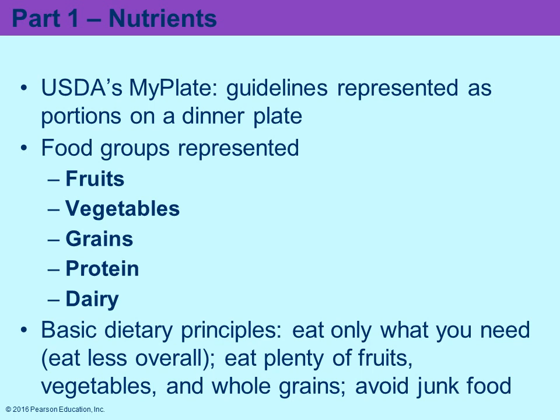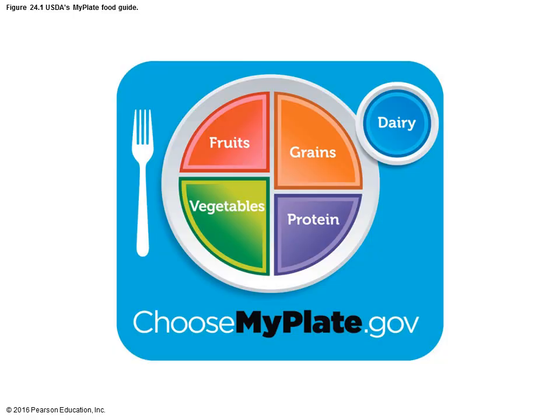Currently they're using what they call the MyPlate. They used to use a food pyramid; now it's the MyPlate. The different foods represented are your fruits, vegetables, grains, protein, and dairy. The general principle is eat only what you need, don't eat in excess, and you should be getting a lot of fruits, vegetables, and whole grains, and try to avoid junk food — which is easier said than done when you're stressed out taking classes in college.